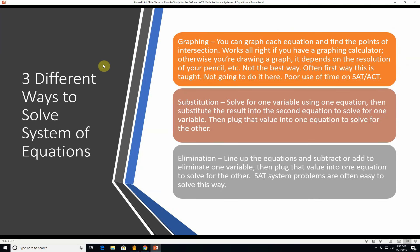Three different ways to solve a system of equations. There's graphing. You can graph each equation and find the points of intersection. It might work okay if you have a graphing calculator that will do two graphs at once. Otherwise you're drawing a graph and then it depends on the resolution of your pencil. On the SAT or ACT the only paper you have to use is the test booklet itself so you're not really going to be able to draw a very detailed accurate graph. It's a really poor use of your time on the SAT or the ACT.